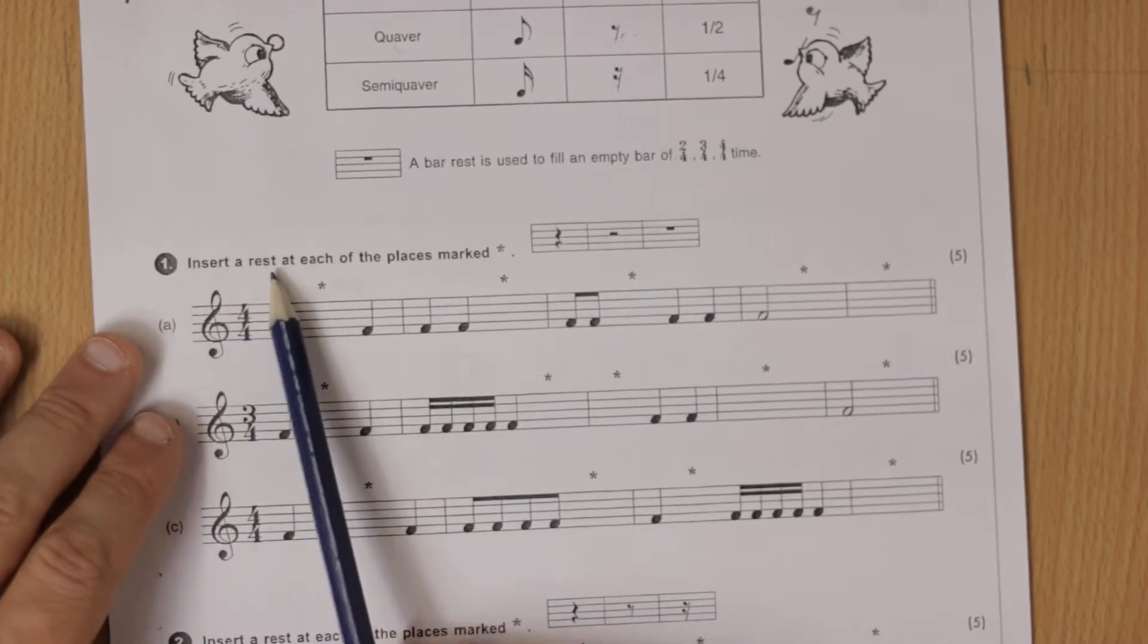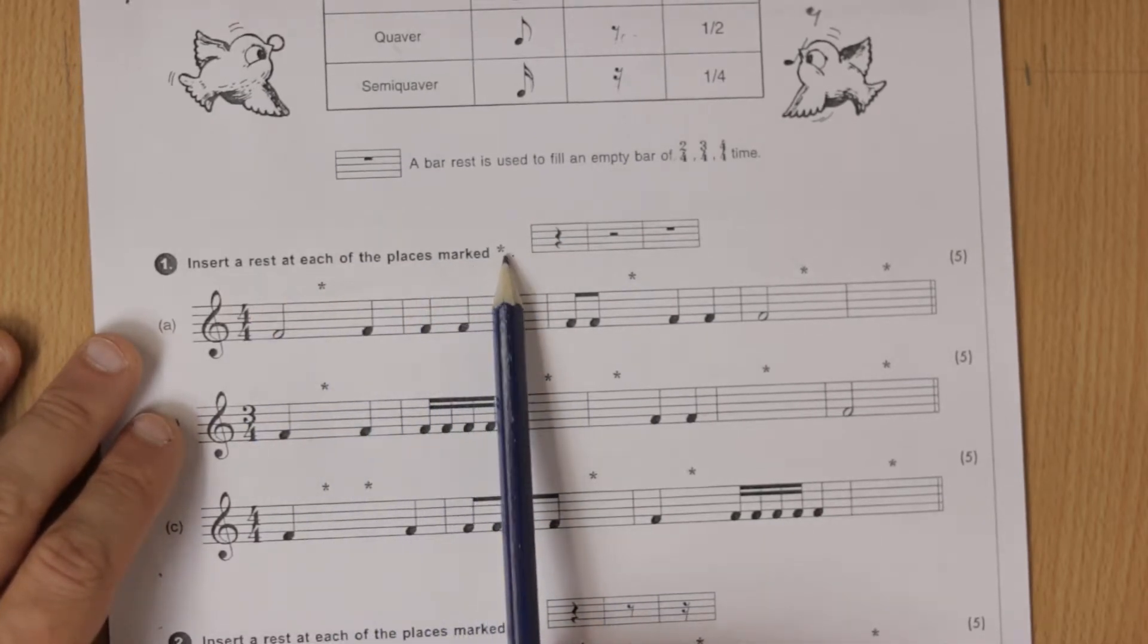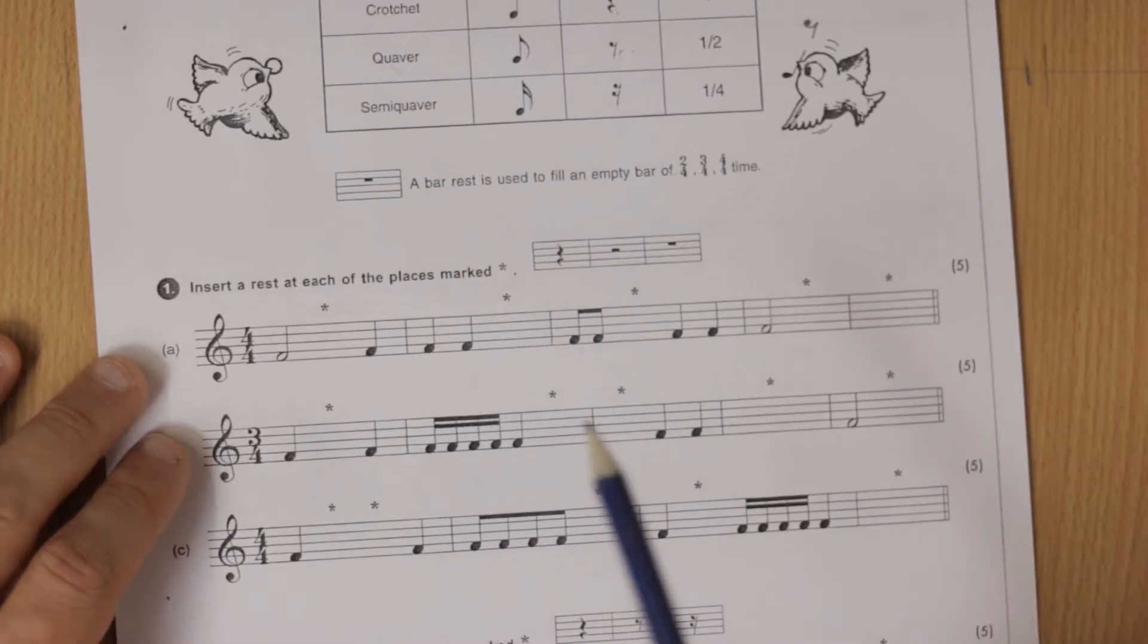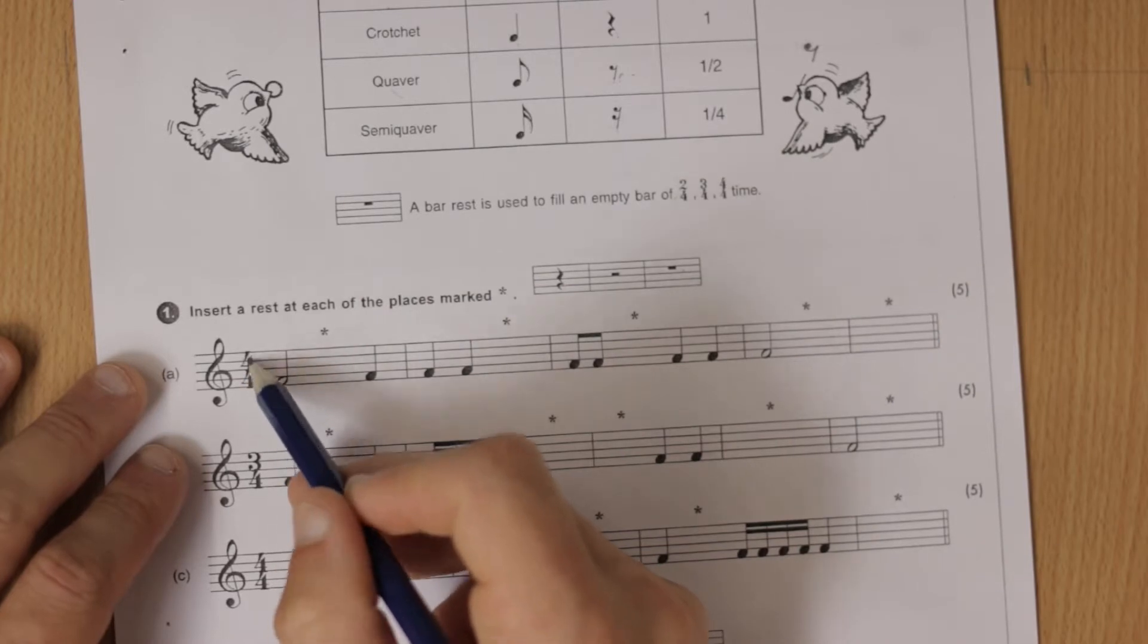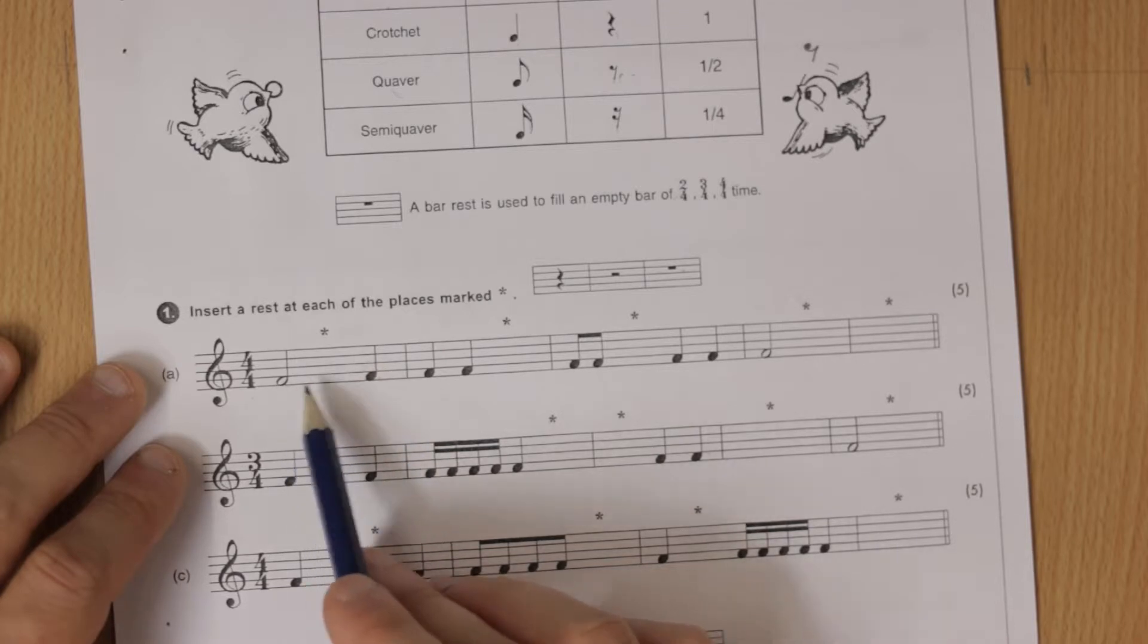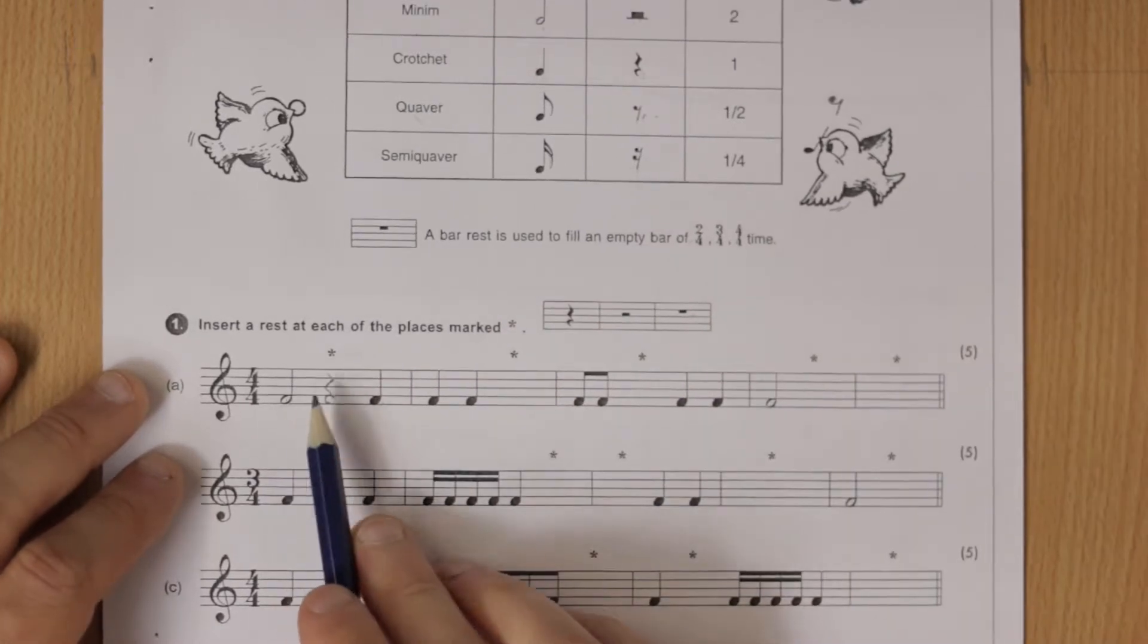Okay, insert a rest at each of the places marked with a star, either with a crotchet rest, a minim rest, or a semi-breve rest. So I'll do one for you. Four-four, that's four beats so that's two plus one, that's three, so we need one extra beat to make four. So we're going to need a crotchet rest. So that's now one, two, three, four.